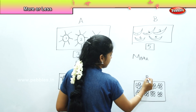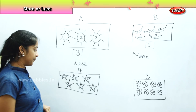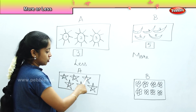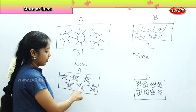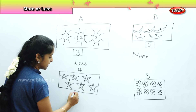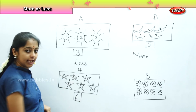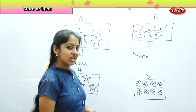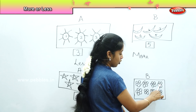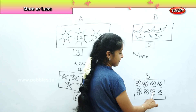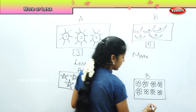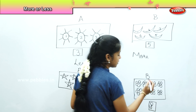This is box A and this is box B. Shall we count the number of stars? One, two, three, four, five and six. So there are six stars in box A. How many flowers are there in box B? One, two, three, four, five, six, seven, eight. There are eight flowers in box B.